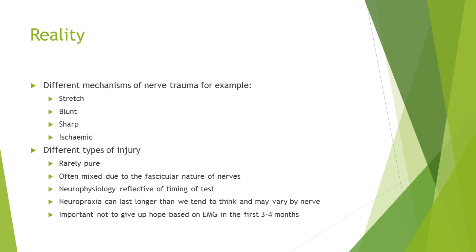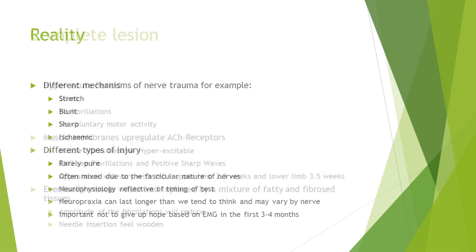In reality, there are different types of mechanisms of nerve trauma: stretch injuries, blunt injuries, crush injuries, sharp injuries, blast injuries, ischemic injuries — and all of these will end up causing different types of patterns of injury. They're very rarely pure, and they're often mixed due to the fascicular nature of nerves. The neurophysiology we see is reflective of the timing of the test. Neuropraxia can last longer than we tend to think and may even vary by the individual nerve. So I always caution it's important for patients in these first couple of months — even if they have been assigned as having a devastating type of nerve injury — not to give up hope based on the EMG findings alone, because sometimes the picture may actually emerge subsequently that it wasn't quite as bad as initially thought.